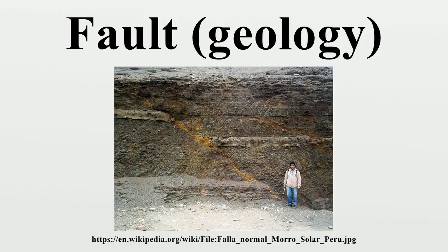Additional fault rock types include: clay smear, a clay-rich fault gouge formed in sedimentary sequences containing clay-rich layers that are strongly deformed and sheared into the fault; mylonite, a cohesive fault rock characterized by a well-developed planar fabric resulting from tectonic reduction of grain size, commonly containing rounded porphyroclasts; and pseudotachylite, an ultra-fine-grained glassy-looking material, usually black and flinty, occurring as thin planar veins, injection veins, or as a matrix to pseudoconglomerates or breccias, which infills dilation fractures in the host rock.